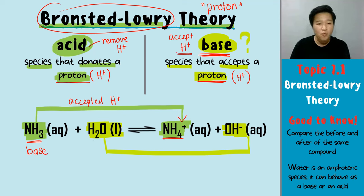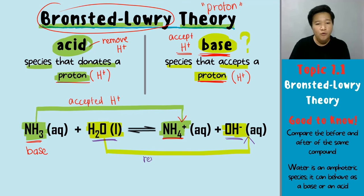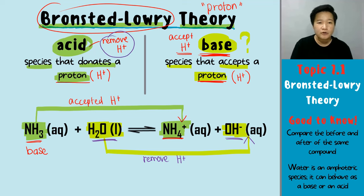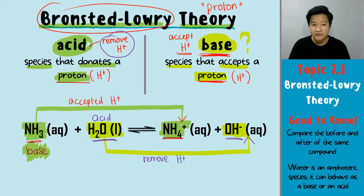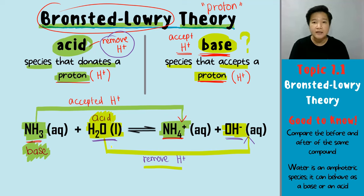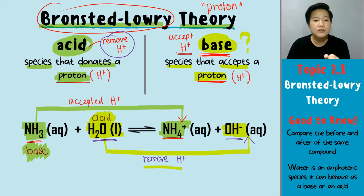Look at the differences between the water and also the product. The water H2O becomes the OH− product. So from H2O becoming OH−, your H2O removed a H+. So when your H2O removes a H+ — removes a proton — that means your H2O right now is an acid. That is how we identify water as an acid here, because your water removes a H+. Bear that in mind, your water is an amphoteric species. When your water is an amphoteric species, it can become an acid and it can become a base, depending on the condition.